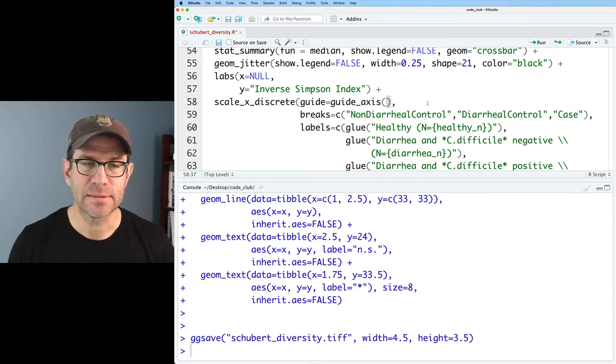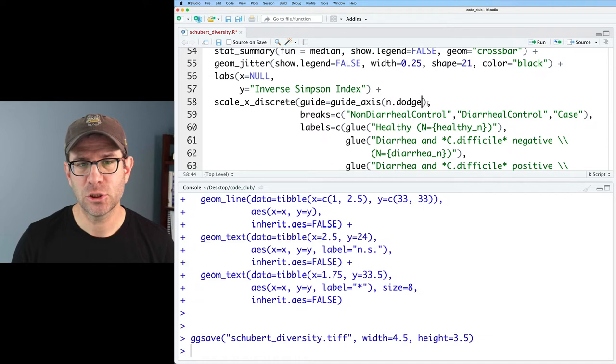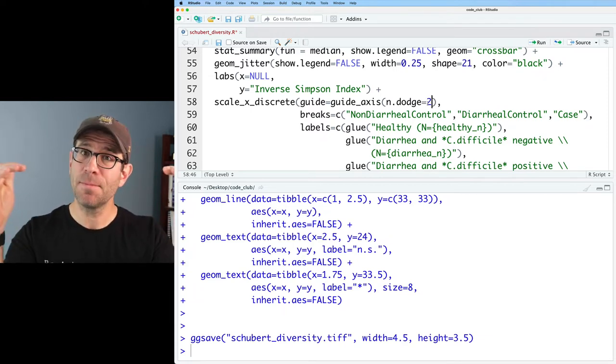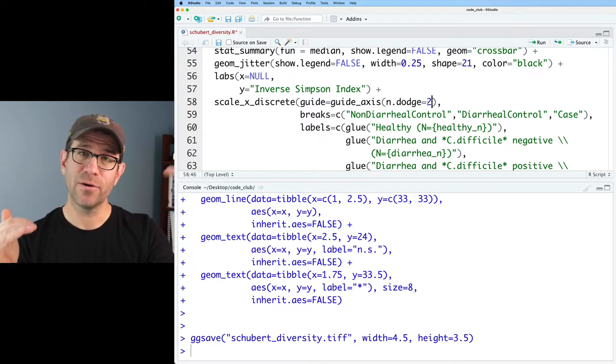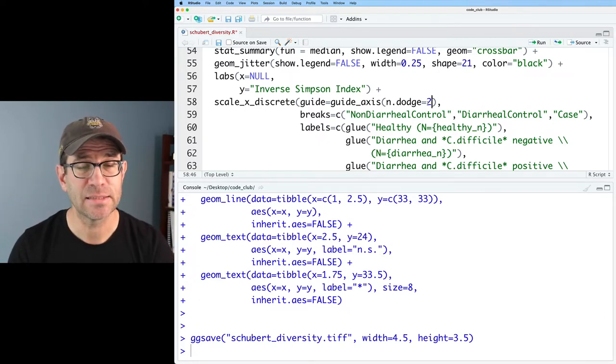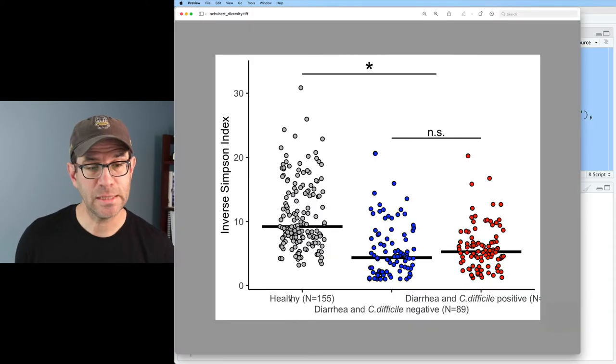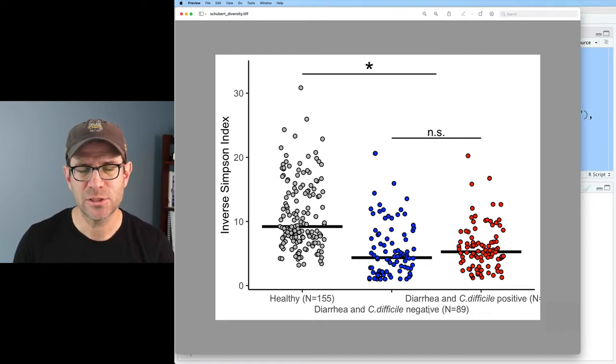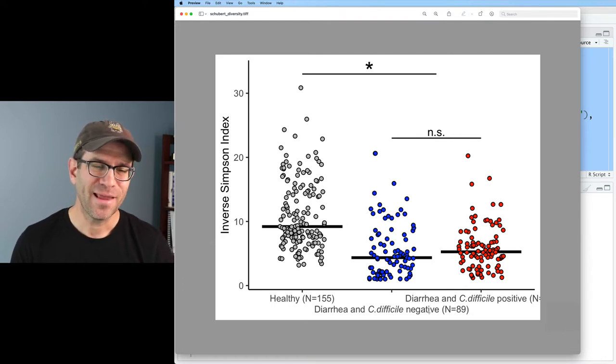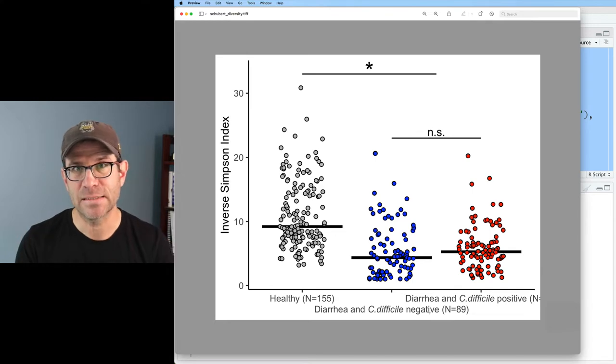Another nice feature within guide_axis is that you can give it the option n.dodge. And what n.dodge does is you give it a number, and it basically makes different rows for each of your labels. And so if you say n.dodge equals two, then you get two rows, and it'll dodge or reposition your x-axis labels so that there's two rows. What we see in this output is that we now have two rows of x-axis labels. They no longer overlap with each other. However, this third one, the C. diff positive one, does run off the right side of the figure. So healthy and diarrhea plus C. diff, and then in the second row, diarrhea and C. diff negative. I'm sure this works in some situations, but in this situation, I'm really not feeling it. It's still quite long and kind of gets kind of messy here in the text.